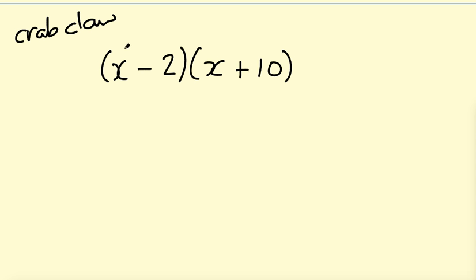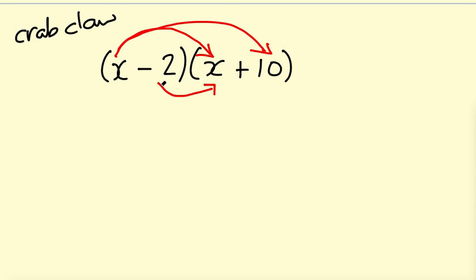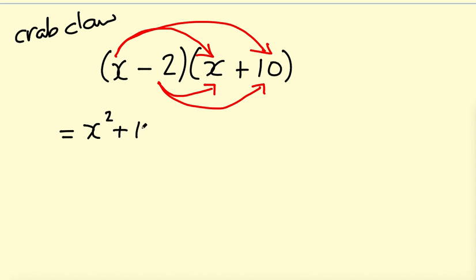So I've got an X here — I need to multiply that by the first X in the second bracket, and then I also multiply that X by the plus 10. Then I've got this negative 2 and I need to multiply that by the X, and then multiply by the plus 10. You can see those arrows kind of make a claw shape — that's why it's called the crab claw method. So you draw your arrows in: X times X gives X squared, X times plus 10 gives plus 10X.